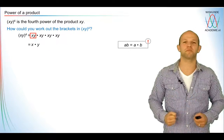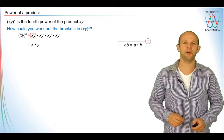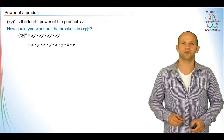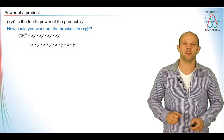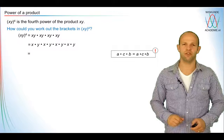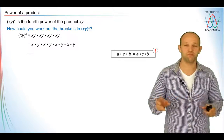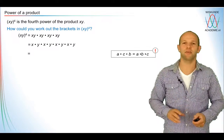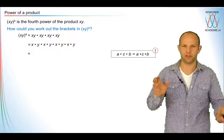So we can also expand this as x times y. And in the same way, because we know ab is a times b, we can do this with the other three parts as well. This gives you xy times xy etc. Now, a good thing to do is to order all the x's and order all the y's. We know that in a multiplication you may change the order — so a times c times b can be written as a times b times c. We can flip those around.